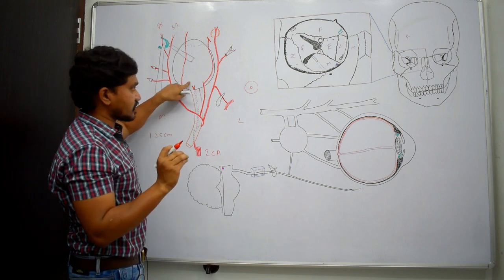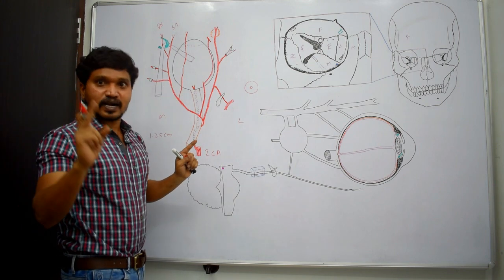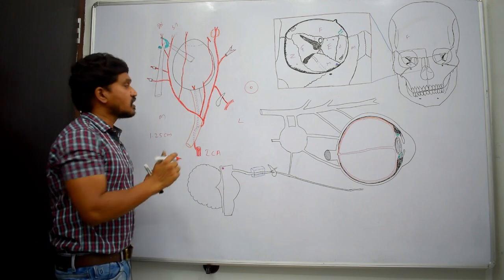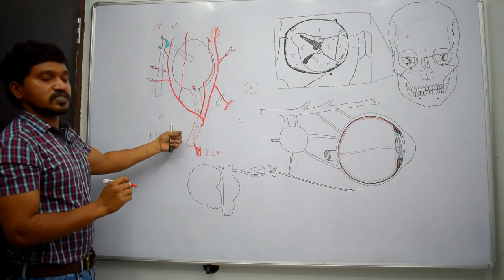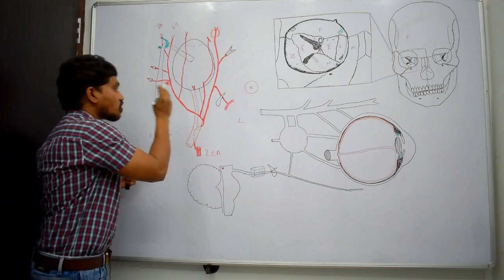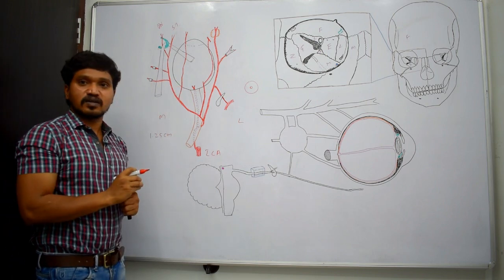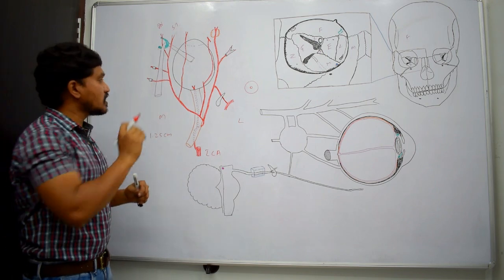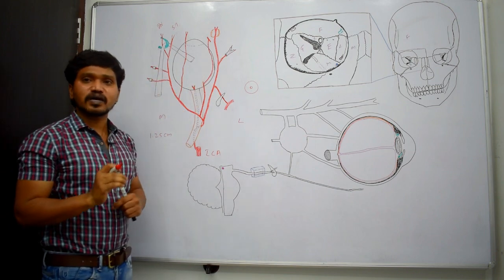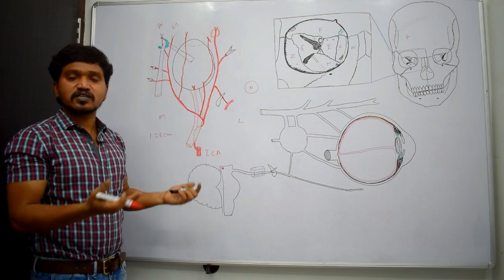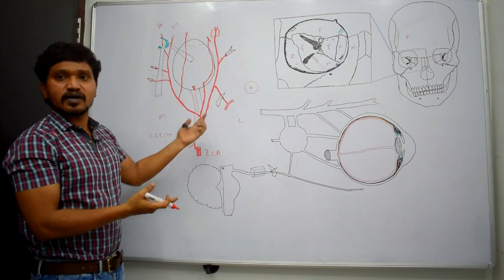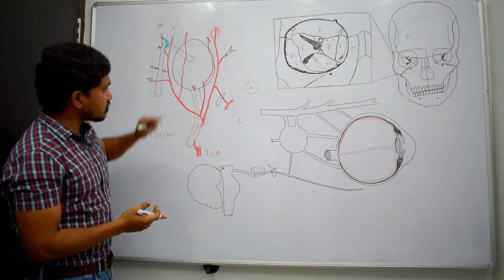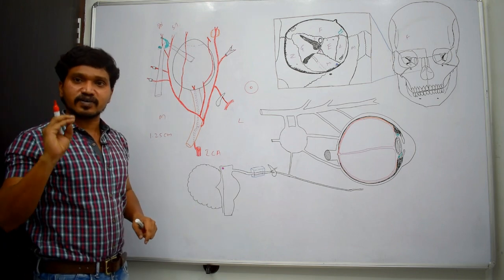It is an end artery and the only artery to the retina. Therefore, any blockage, occlusion, or obstruction leads to sudden blindness because there are no other arteries to supply the retina. That is about the central artery of the retina.